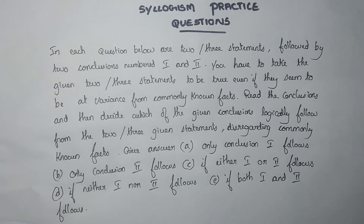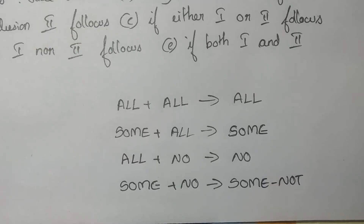Now the combination rules: All plus All gives All. Some plus All gives Some. All plus No gives No. Some plus No gives Some Not. Note that 'All' is irreversible, while 'Some' and 'No' are reversible. 'Some Not' does not change.